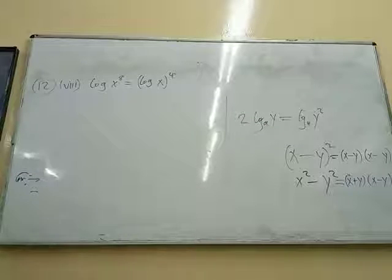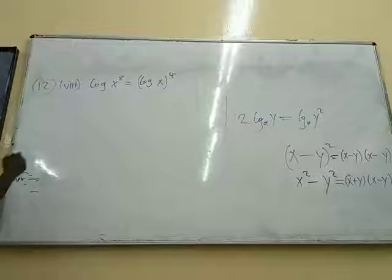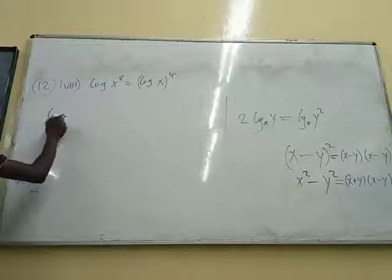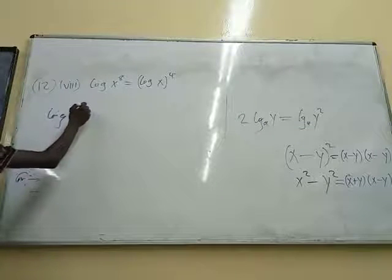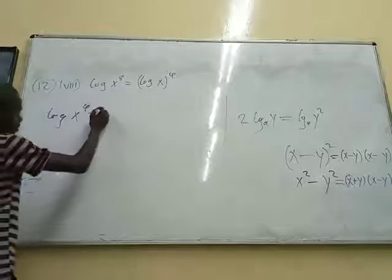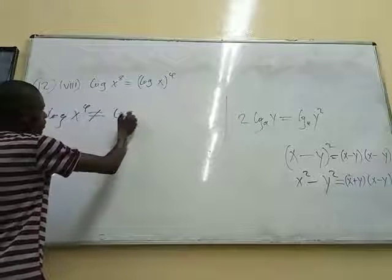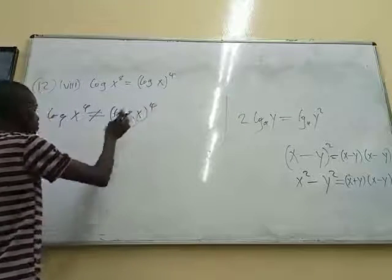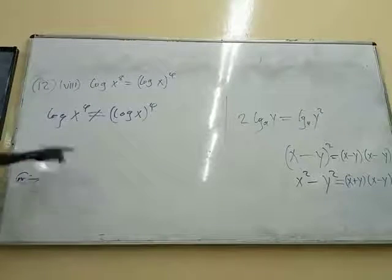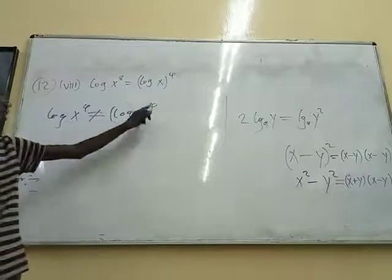Look at this. When you have the log of x to the power 4, this is not equal to the log of x to the power 4. These are two different things. This 4 can drop here, but this one cannot drop.